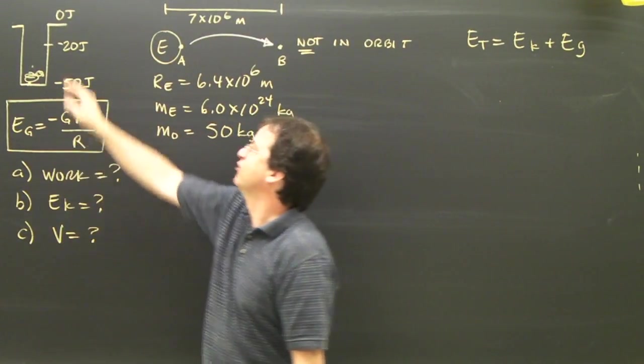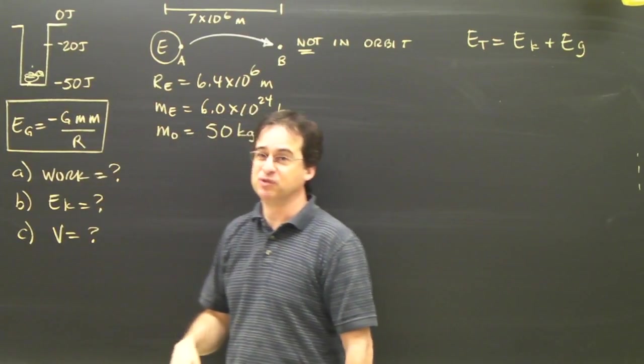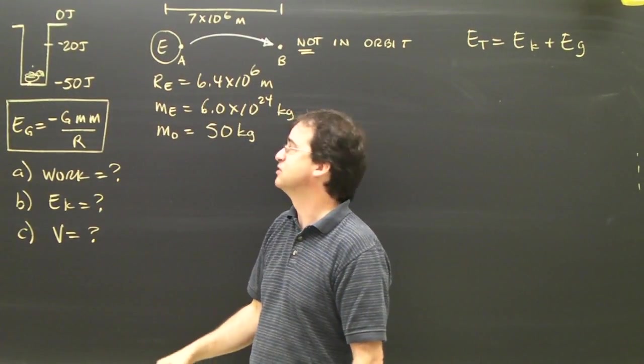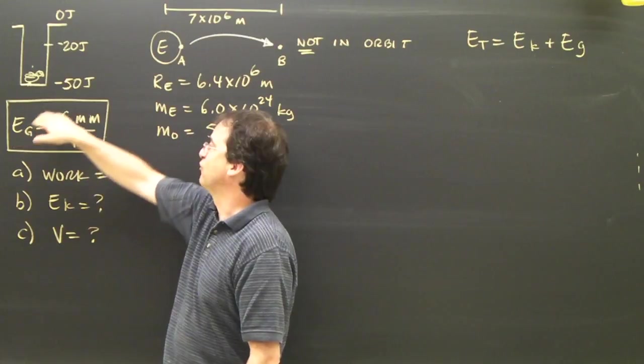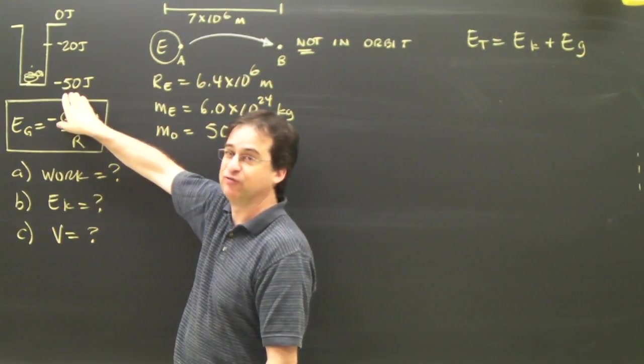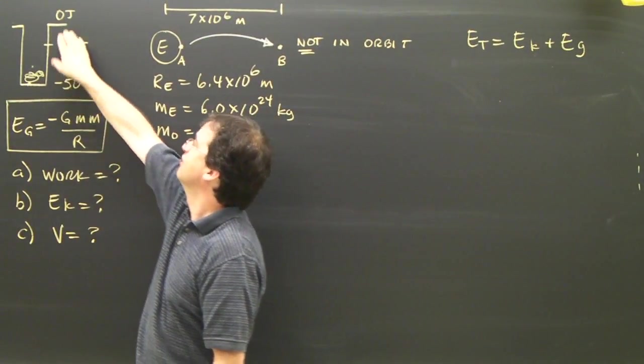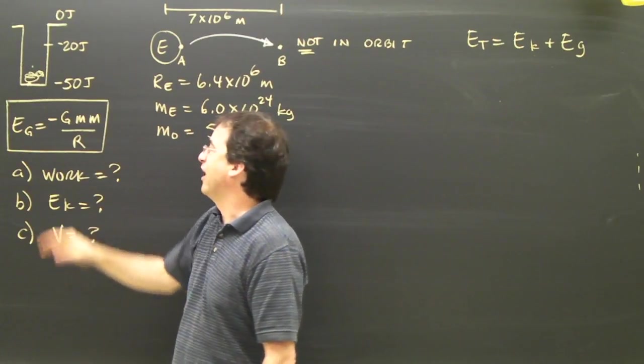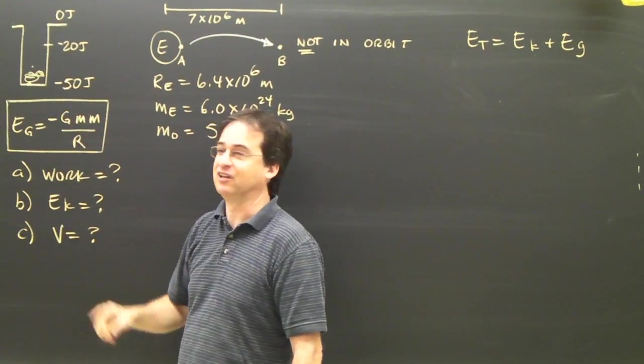if energy is negative 50, the energy level at there, which is infinity for these types of problems, is zero. So if I add 50 joules, if I do 50 joules of work on this chicken, it'll end up at that height. If I add 50 joules of kinetic energy, it'll end up at that height.